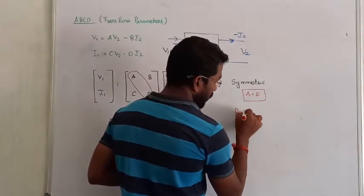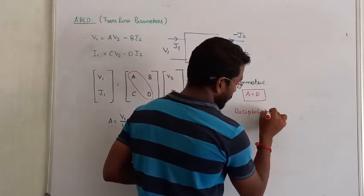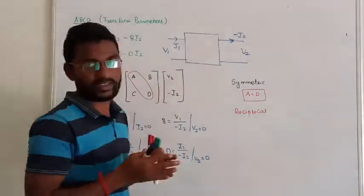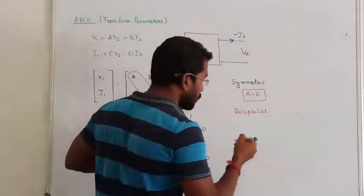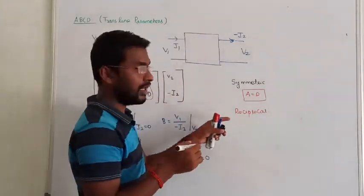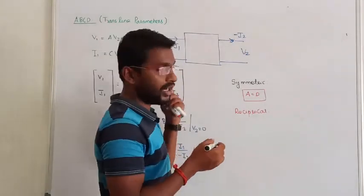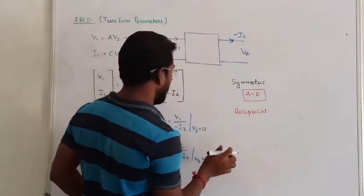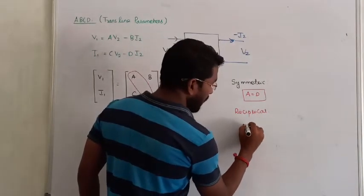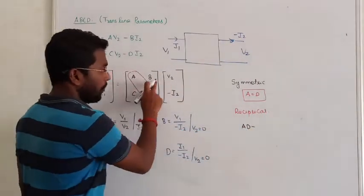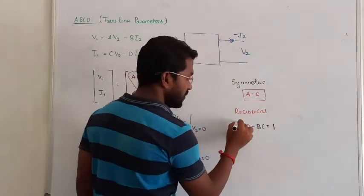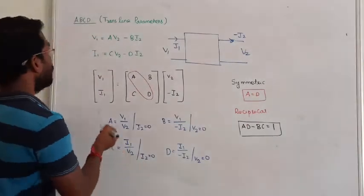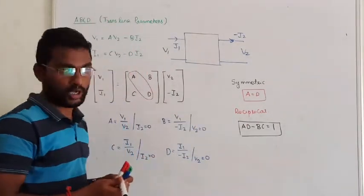Next one is you have to check the reciprocity. Now to know the reciprocity, here the condition is you have to find out the determinant. Hybrid matrix, we have to look at the opposite. So if the reciprocity condition is satisfied. In the reciprocity, find the determinant of the matrix. Determinant means A into D minus B into C must be equal to 1. So this is the condition for reciprocity. So if both written conditions satisfy the condition, that network is symmetric and reciprocal.